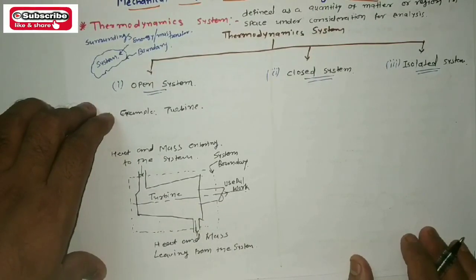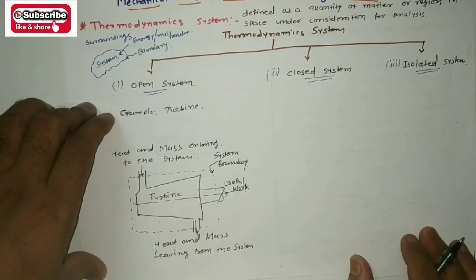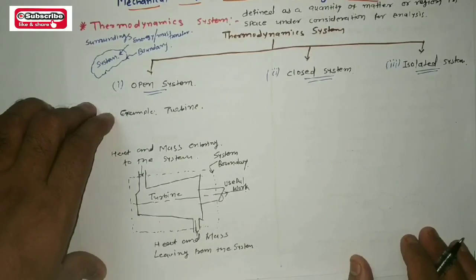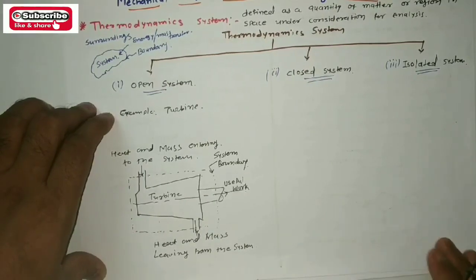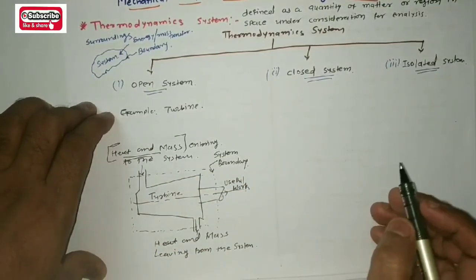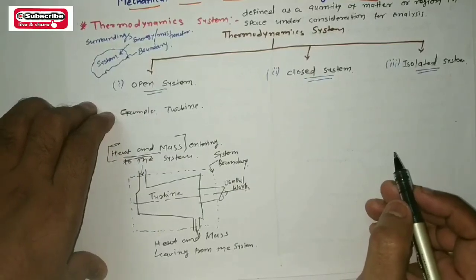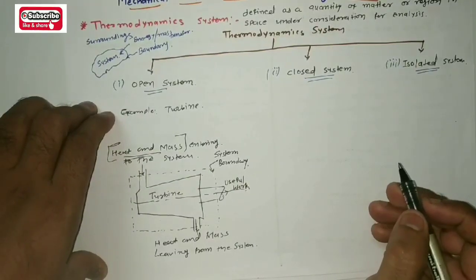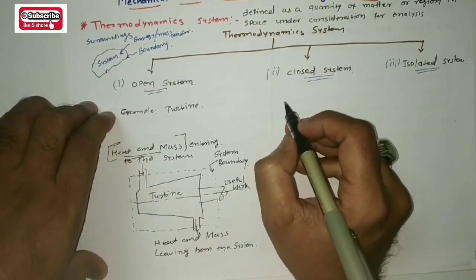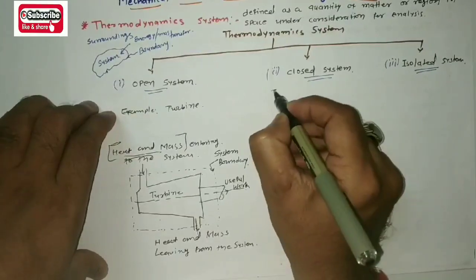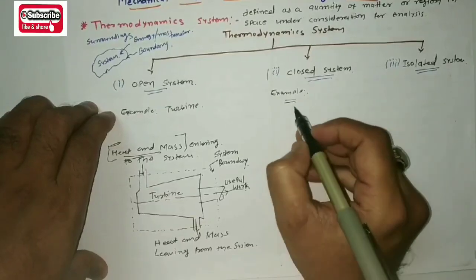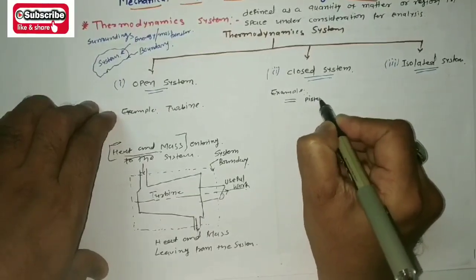Now I want to talk about closed systems. In the case of closed systems, only energy transfer occurs at its boundary regions. In the case of open systems, heat and mass transfer both occur, but in the case of closed systems, only energy transfer occurs at its boundary.